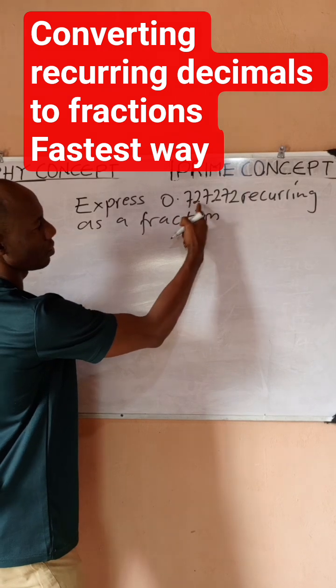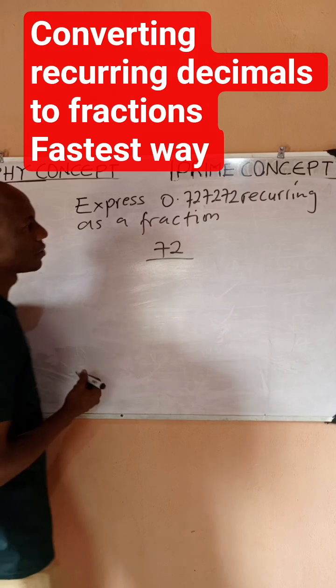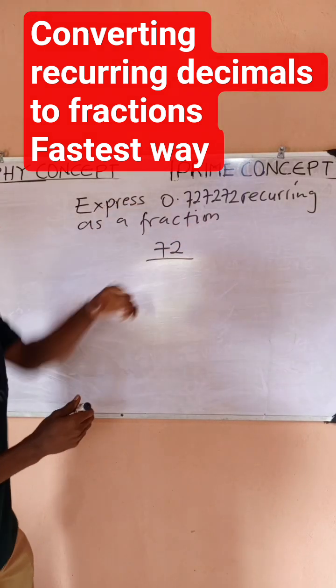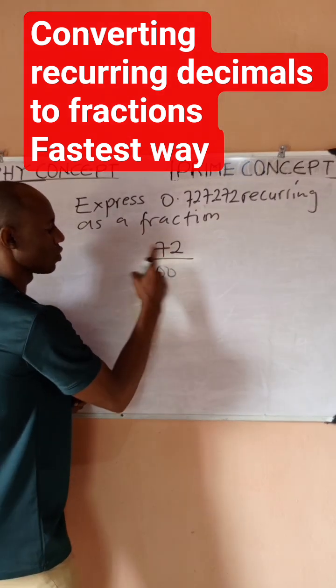That is recurring, so you say 72 divided by—the number that is recurring is two digits, so it means two zeros. Two zeros represents 100, so I'll say 100, which is two zeros, then minus 1.